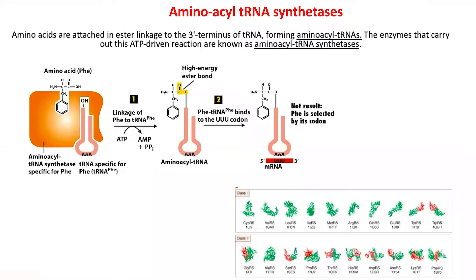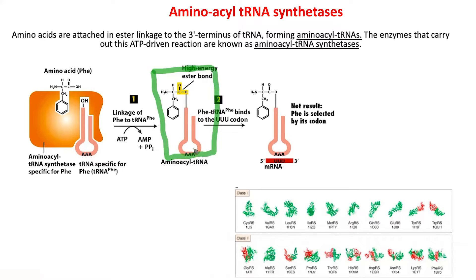Having looked at the genetic code and the ribosome, the next question is: what is transfer RNA? There is one transfer RNA for each amino acid. Each transfer RNA has the ability to charge an amino acid. Charging means the tRNA is hooked up to an amino acid through a high energy ester bond, so for each amino acid there is a tRNA which can specifically charge to that amino acid, with a relationship to the anticodon.